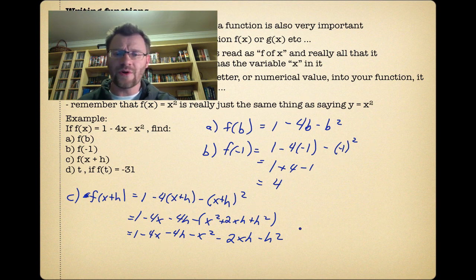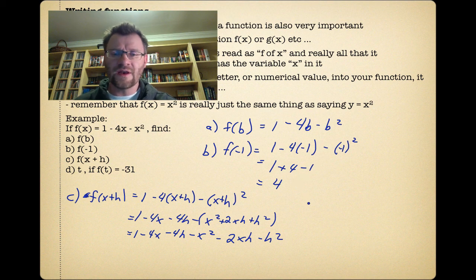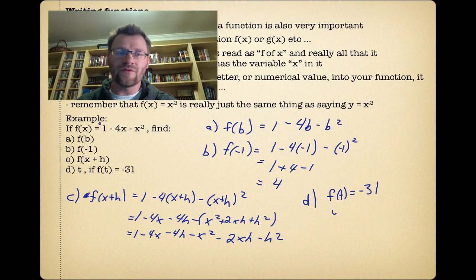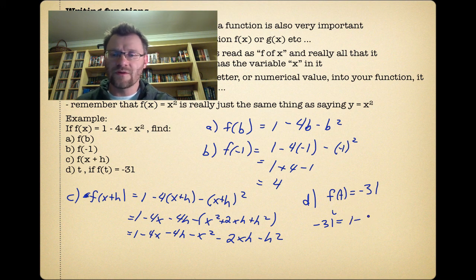The final one, part D, it says find out what t is if f(t) is equal to -31. So if f(t) is equal to -31, that means your function is equal to -31. So we can turn this thing into an equation that equals -31. And they said it's f(t), so to be entirely right, we're going to change these into t's. Now we have a quadratic equation. What we need to do here is move everything to the same side, and then we can evaluate it.